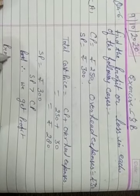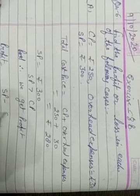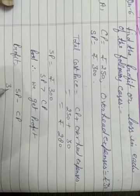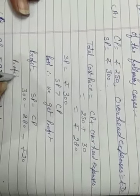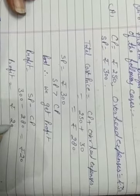Profit is equal to SP minus CP. 300 minus 280 is equal to Rs. 20. Profit is equal to Rs. 20.